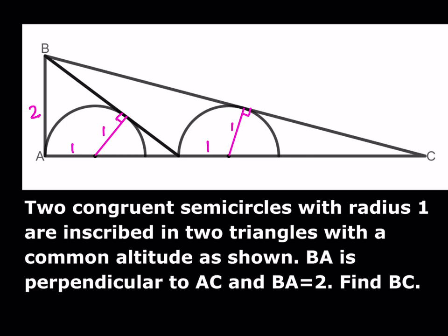I'm going to call this length here x. This is also 2 because those are two tangents drawn from outside. And let's call this length y here. From the Pythagorean theorem, the hypotenuse is going to be the square root of x squared plus 1, and here it's going to be the square root of y squared plus 1.